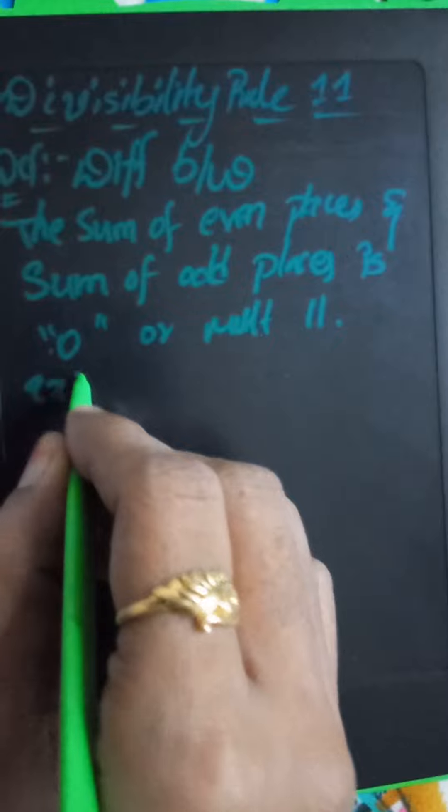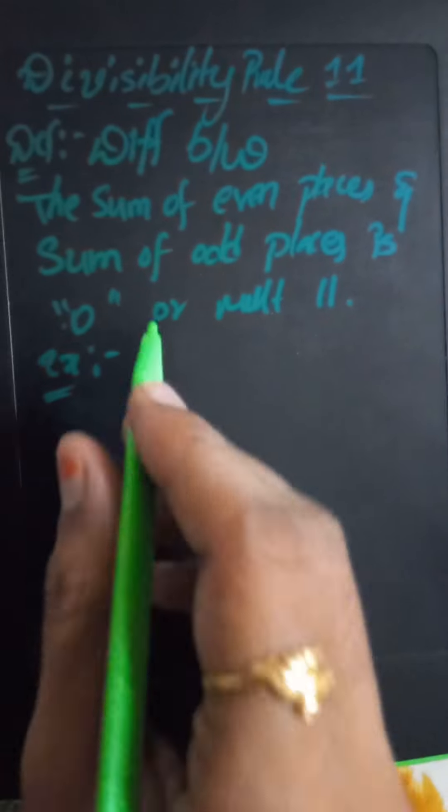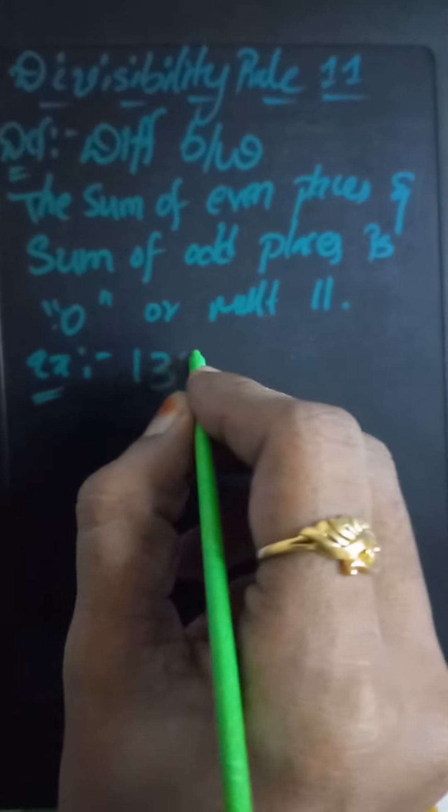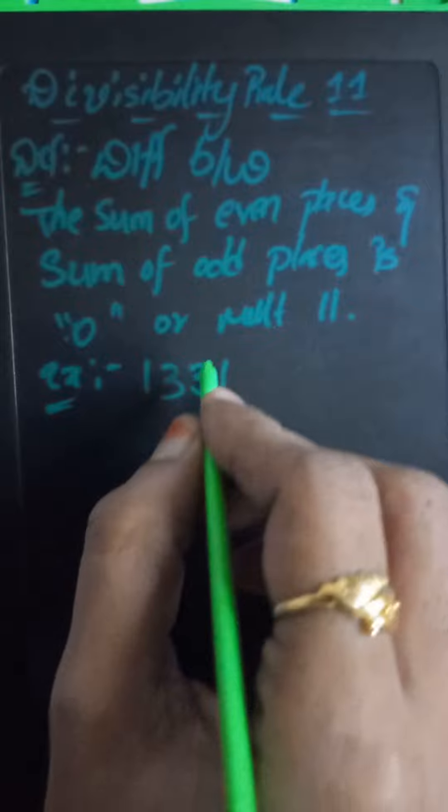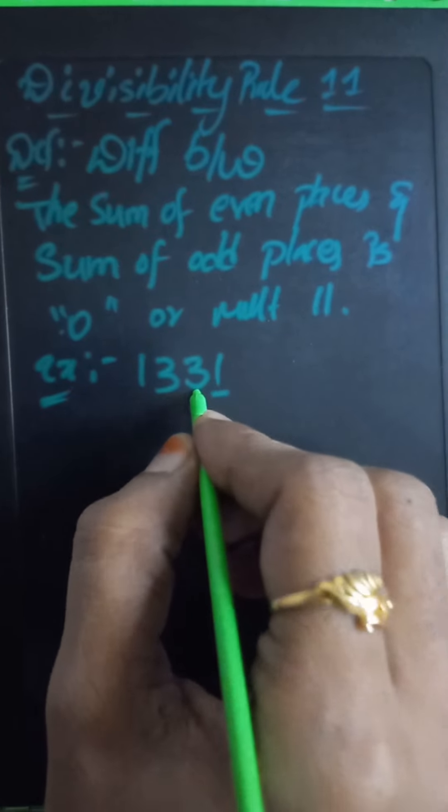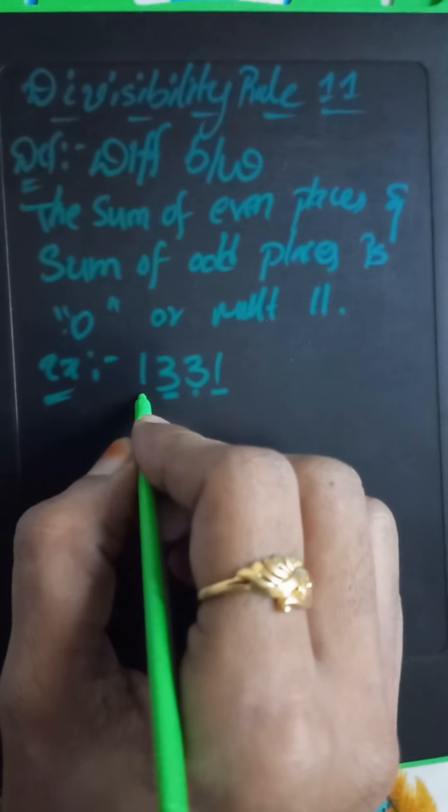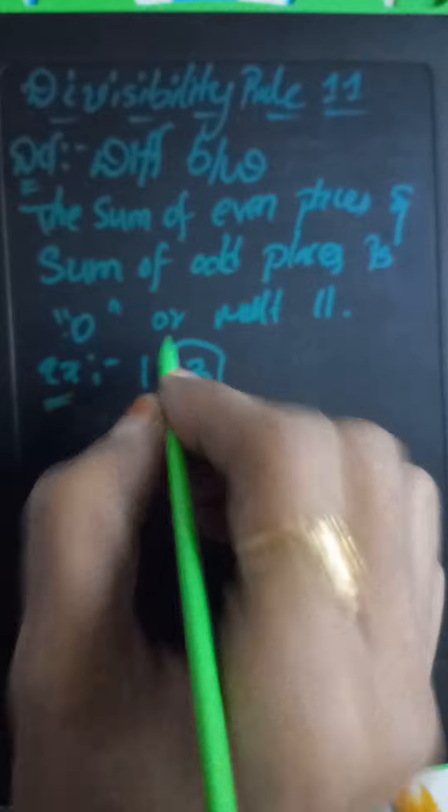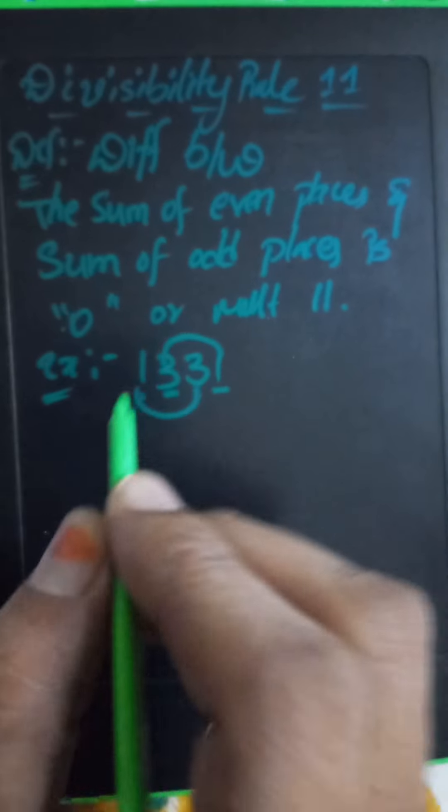For example: 1331. So this is the even place, this is the odd place, this is the even place, this is the odd place. So 1 plus 3, 3 plus 1.